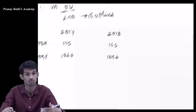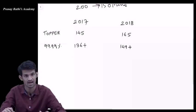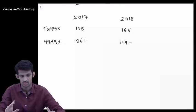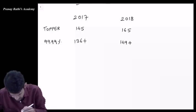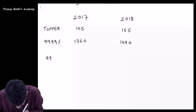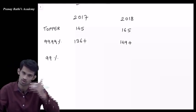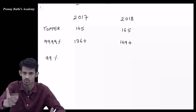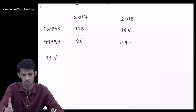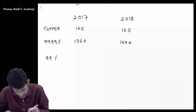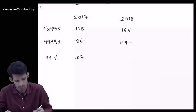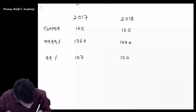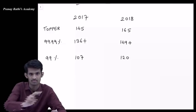The 99.99 percentile score which was at 136 in 2017 rose to 149 in 2018. That's a 13 marks rise for 99.99 percentile. For 99 percentile, in 2017, 107 marks were needed, and in 2018, 120 marks were needed, a 13 marks rise.